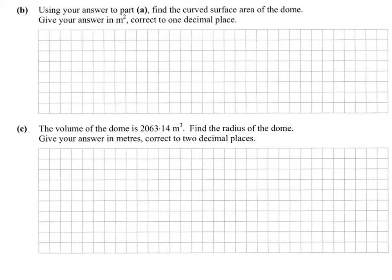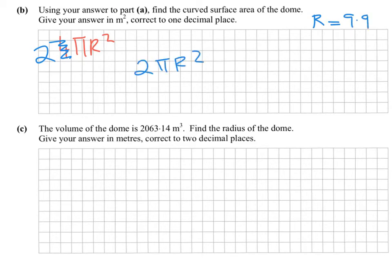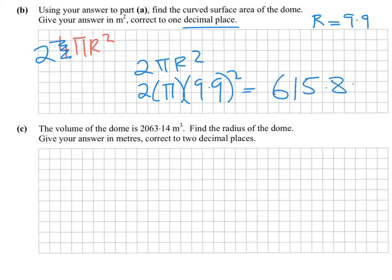Find the curved surface area of the dome in meters squared, correct to one decimal place. The curved surface area of a full sphere is 4πr², but we have a hemisphere so the formula is 2πr². From the earlier part, the radius is 9.9. So it's 2π × 9.9². Using π = 3.14 or the calculator's π button, you should get 615.8 meters squared.